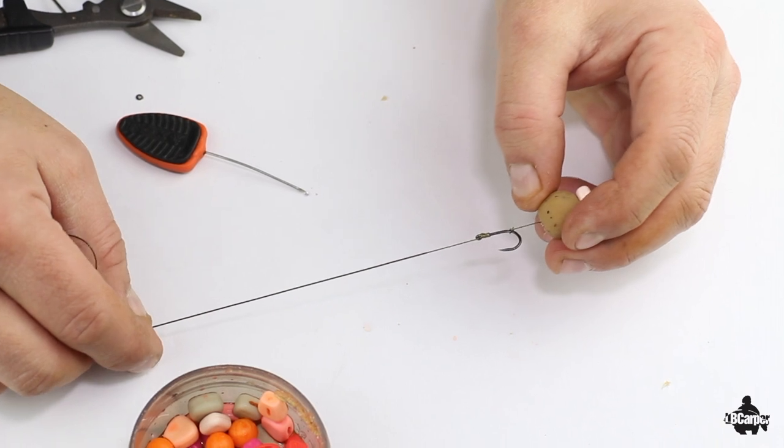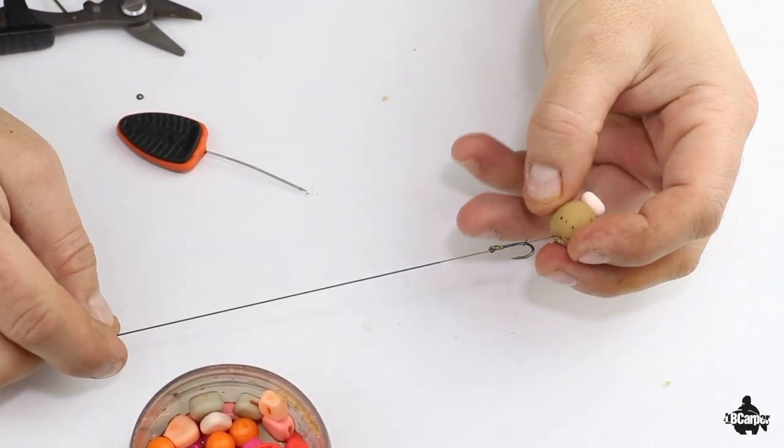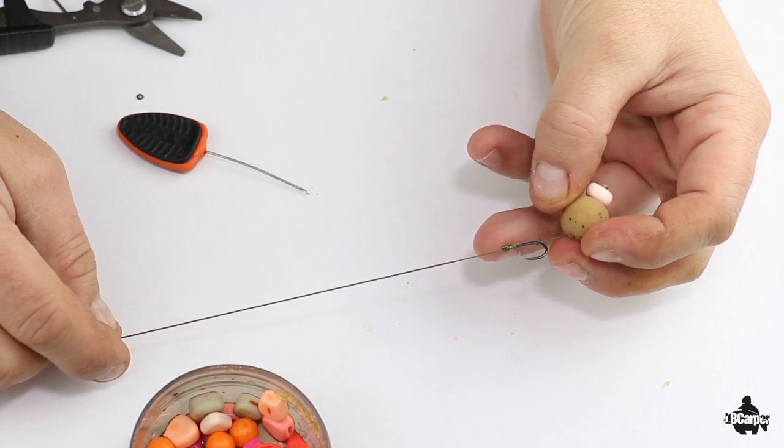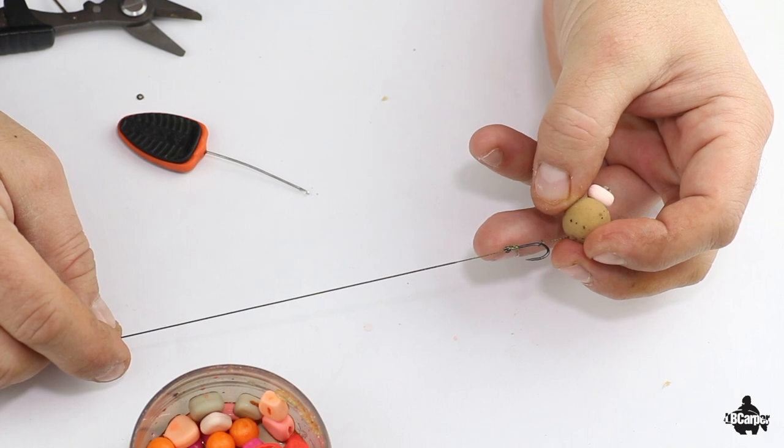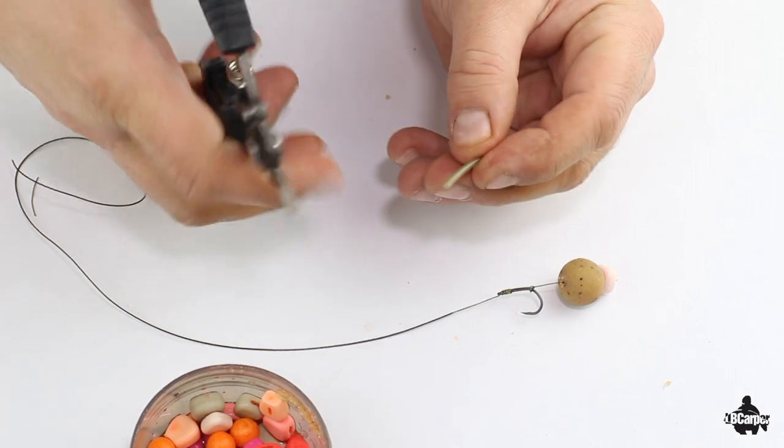Now the next thing to do is I want to stick on a little bit of shrink tube just to act as a tiny little kicker and protect the end of the line there, the end of the hook link. Small piece.